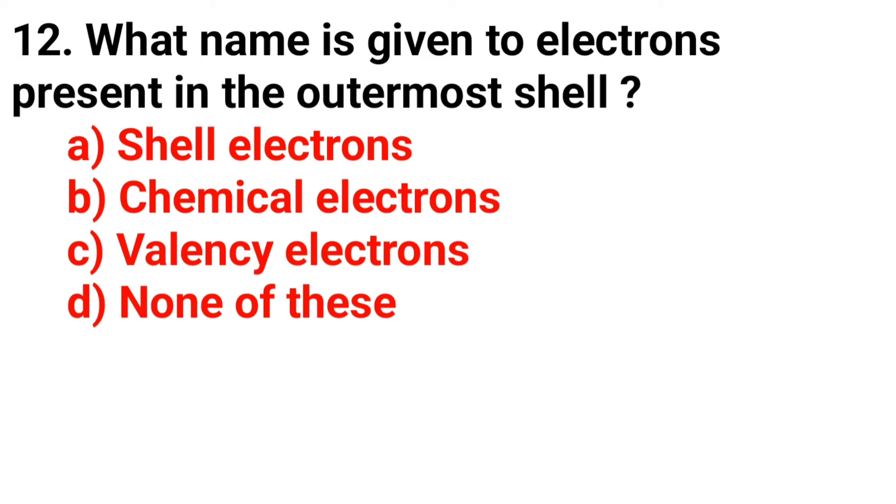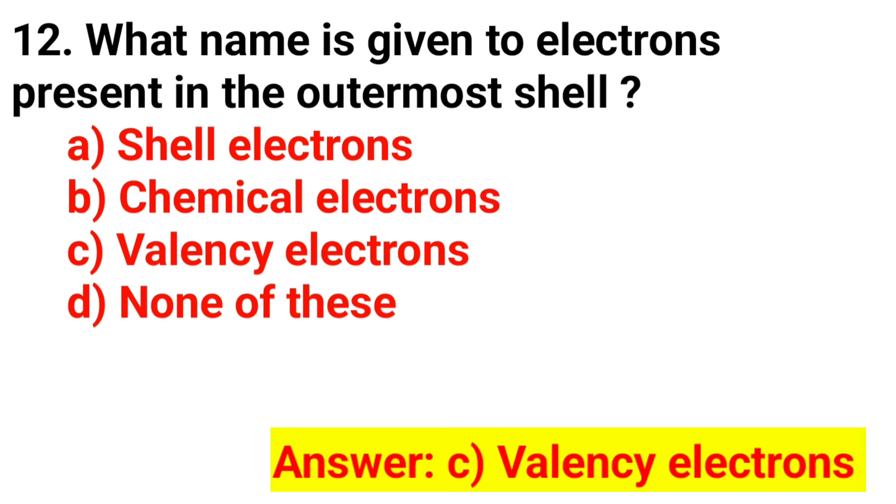Question 12: What name is given to electrons present in the outer shell? The answer is option C, valence electrons.